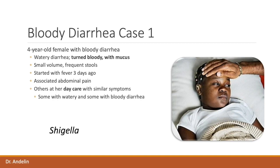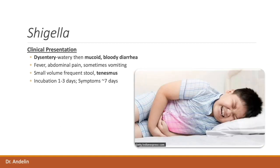This is a case of dysentery caused by Shigella. The classic presentation of Shigella begins with watery diarrhea that turns bloody and mucoid — this can be referred to as dysentery or invasive diarrhea. Dysentery is defined by Harrison's as a clinical syndrome of fever, intestinal cramps, and frequent passage of small bloody mucopurulent stools. Shigella can also lead to tenesmus, which is the sensation of needing to defecate although there's no passage of stool.